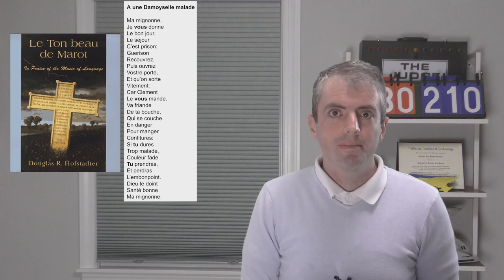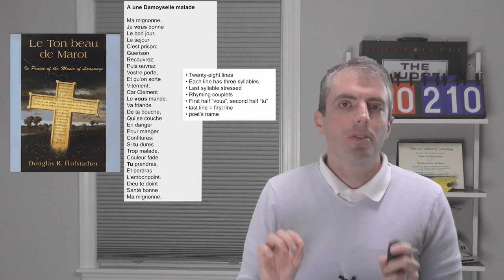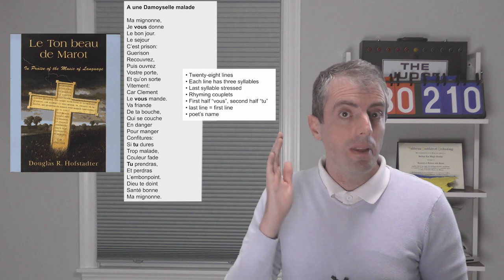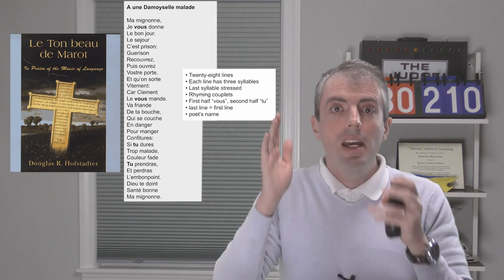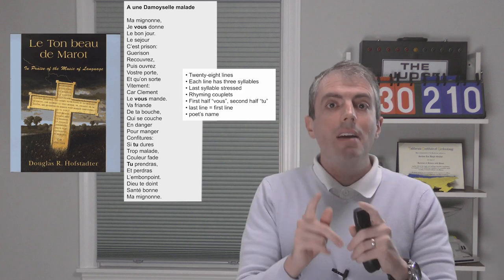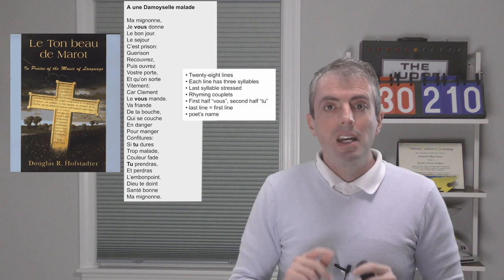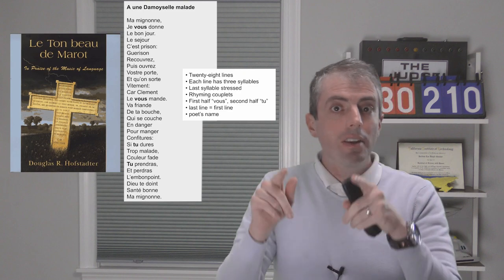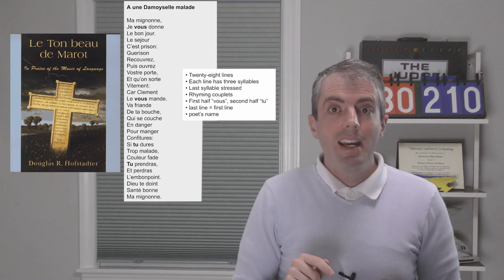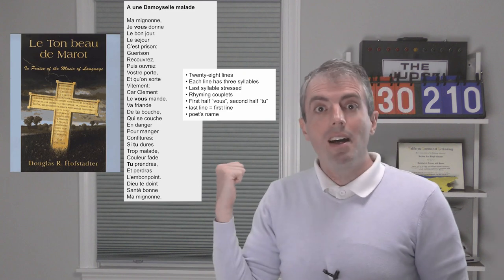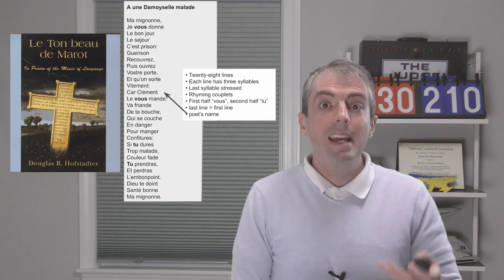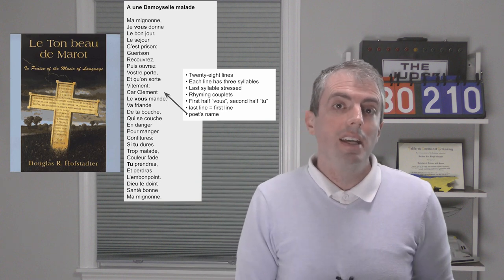If you want to exactly capture the structure of the poem in a translation, you should keep it at 28 lines. With each line having three syllables, stress the last syllable of that line, and make sure every pair of lines rhyme. Start the poem formal, end it informally, make sure that the first line matches the last line, and work in Clement, the name of the author, in here somewhere.